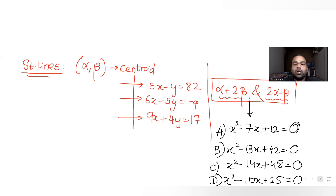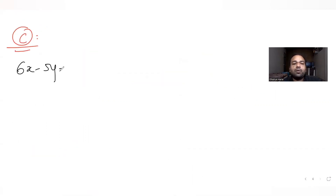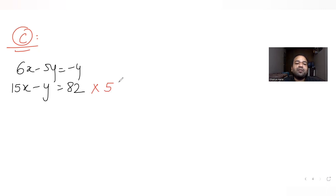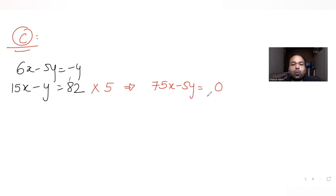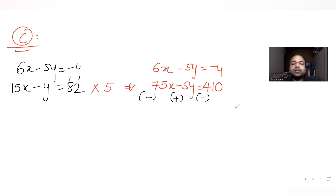Now let's find the third vertex C, which is the intersection of 15x minus y equal to 82 and 6x minus 5y equal to minus 4. To solve simultaneously, I multiply the first equation by 5 to make the coefficients of y the same, giving 75x minus 5y equal to 410. Keeping the second equation as 6x minus 5y equal to minus 4, I subtract.